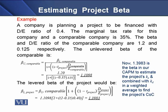The example says that a company is planning a project to be financed with a debt-to-equity ratio of 40 percent. The marginal tax rate for this company and a comparable company is 35 percent. The beta and debt-to-equity ratio of the comparable company are 1.2 and 0.125 respectively. Using the model for determining the asset beta of the comparable company, the resulting unlevered beta value is 1.1098.